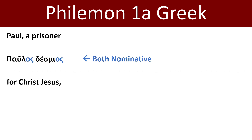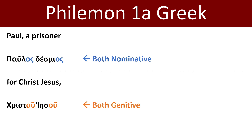Now let's look at the second half of this phrase: Paul, a prisoner for Christ Jesus. There are two Greek words that give us this phrase: Christu Jesu. I've highlighted the endings there — they're different. In this case they're both genitive, which is where we get the English word 'for' being added to our translation.